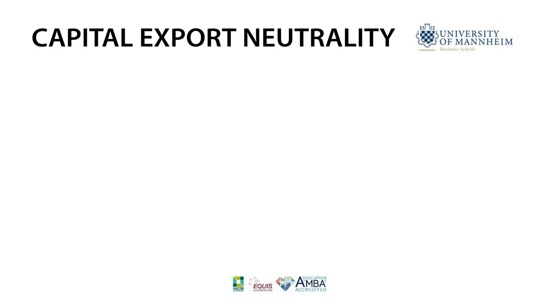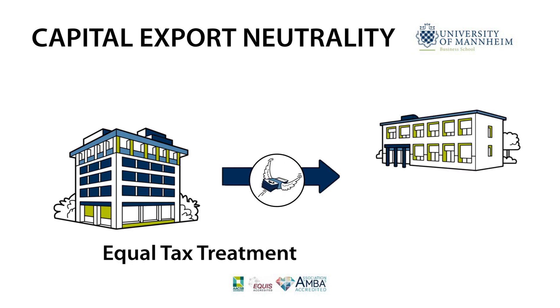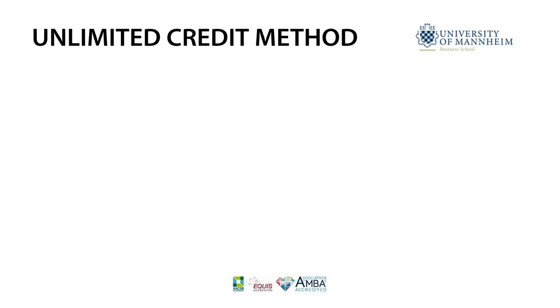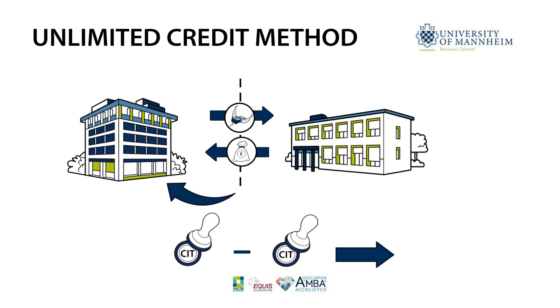Under capital export neutrality, all resident investors receive equal tax treatment regardless of whether they invest domestically or abroad. Capital export neutrality is achieved by the unlimited credit method. Under the credit method, foreign taxes paid can be credited against the domestic tax liability. Thus, the domestic tax burden becomes definite and all resident investors are taxed uniformly from the perspective of the domestic country, resulting in capital export neutrality.